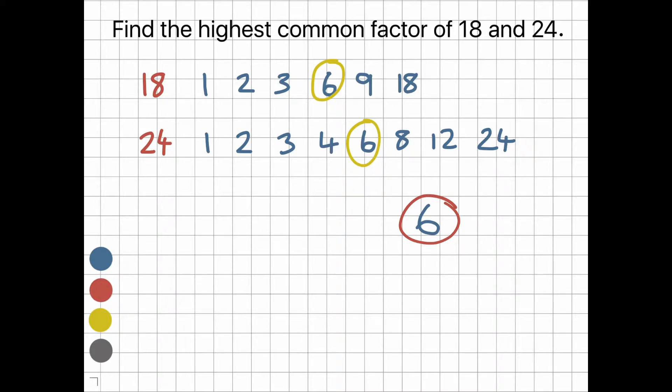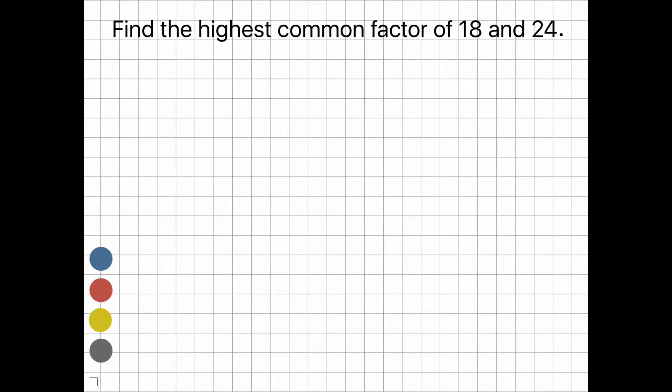This is one way of working this out, but it will take a long time if you have large numbers. So here is another way using the prime factors. The same question: find the highest common factor of 18 and 24.